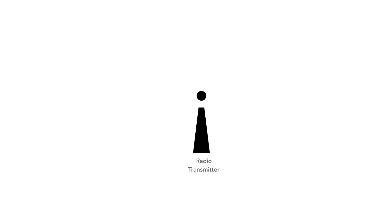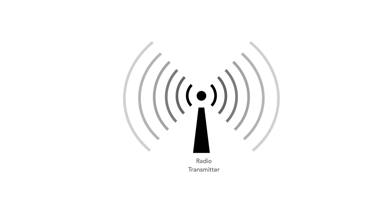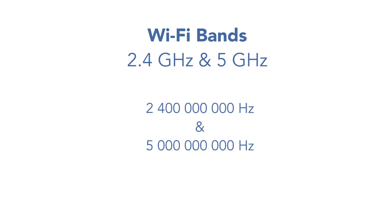Wi-Fi signals are like other radio signals, although they're actually relatively high in frequency. Current systems operate at either 2.4 or 5 gigahertz — that's 2.4 or 5 thousand million hertz or vibrations per second — and this has an impact on how they travel.